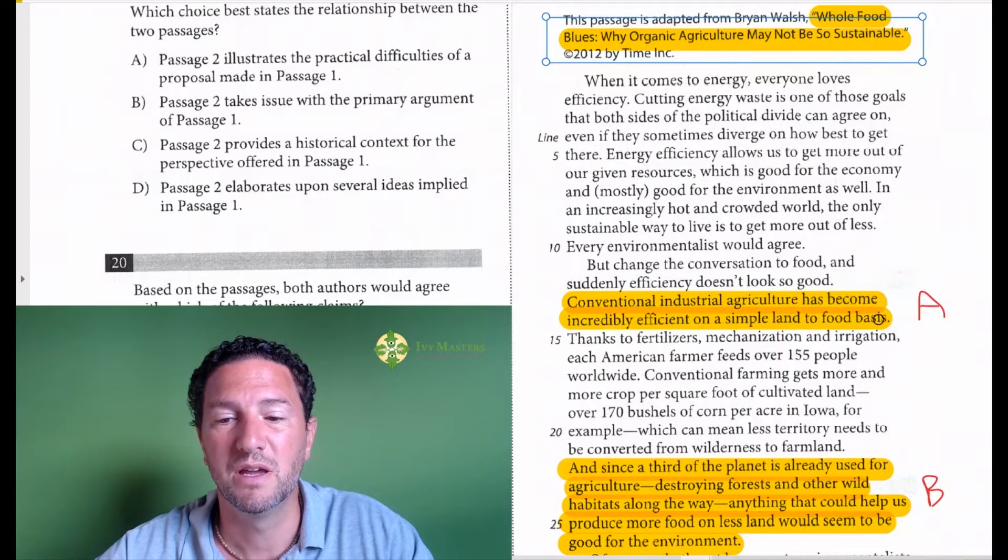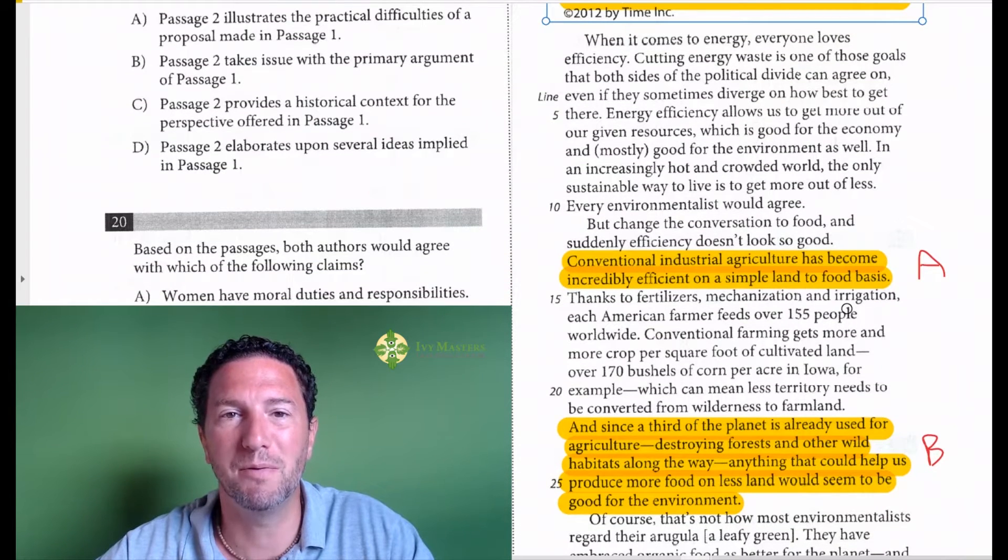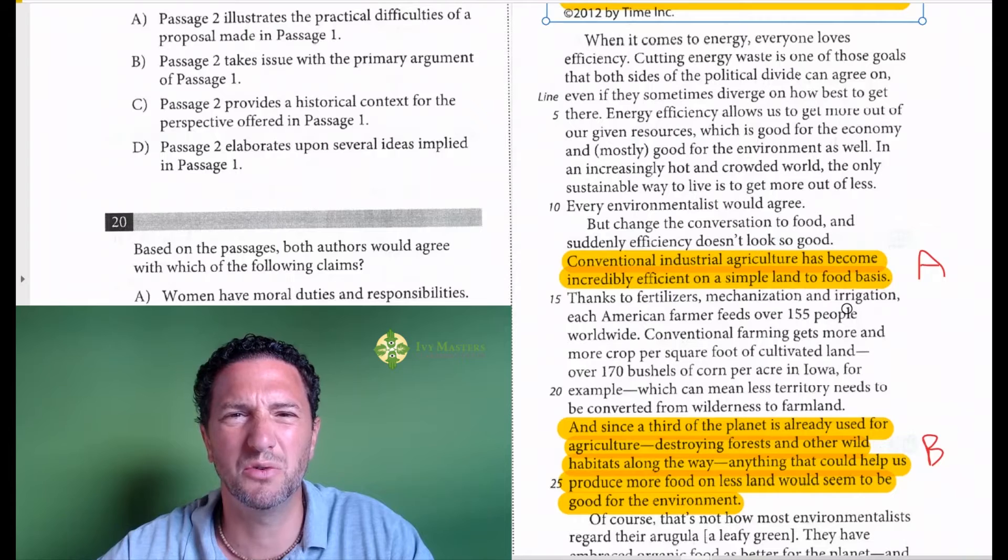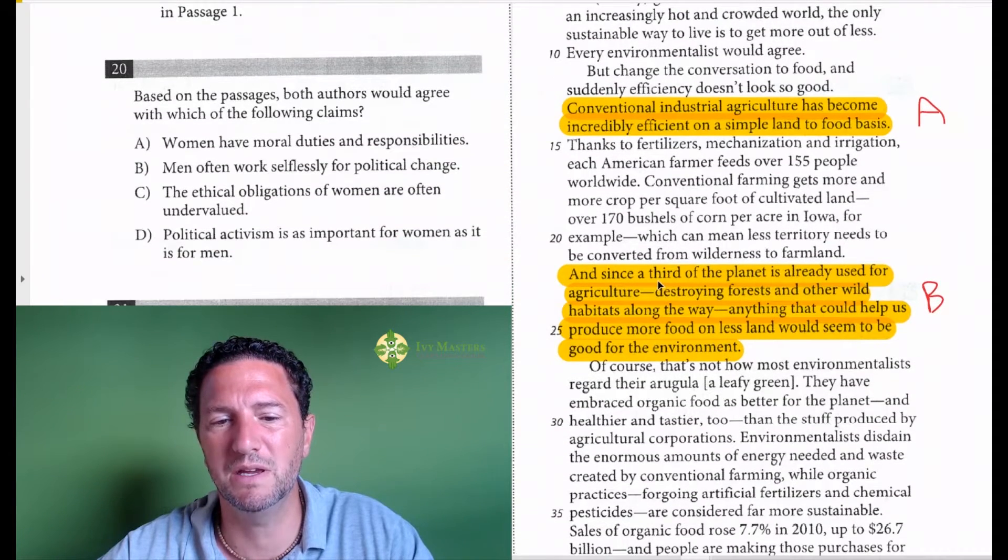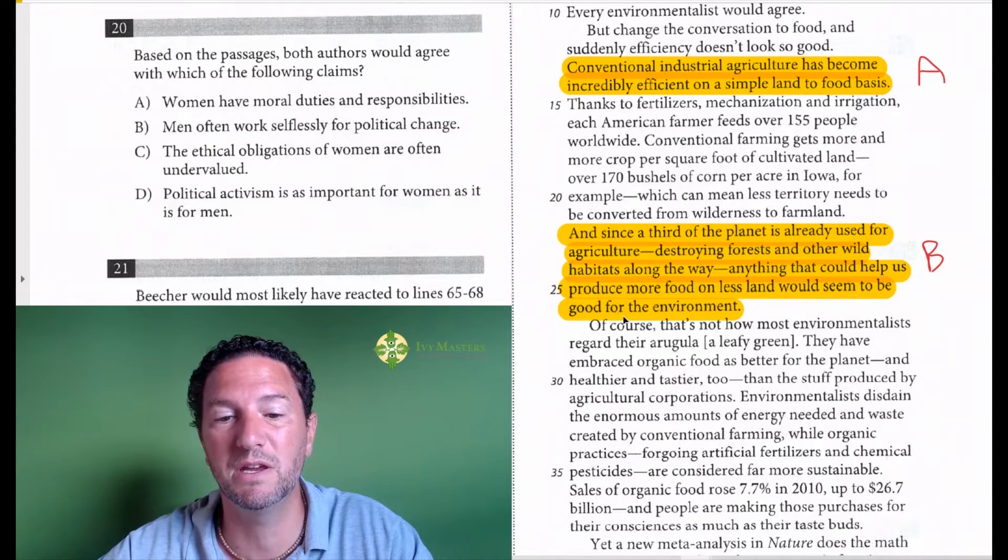And if we do read, basically what it says is that you could get more crop per acre for conventional farming than you can for organic farming. So you've got to cut down less forest. Answer choice B: since a third of the planet is already used for agriculture, destroying forests or other wild habitats along the way, anything that could help us produce more food on less land would seem to be good for the environment. And that's the premise of his argument.